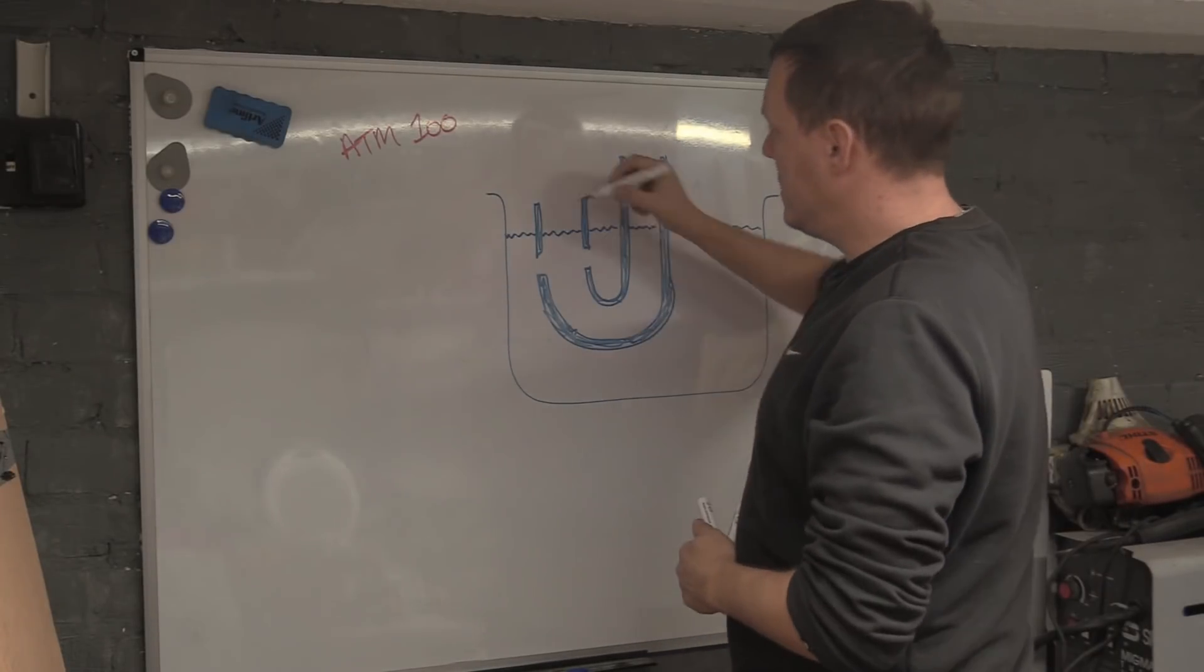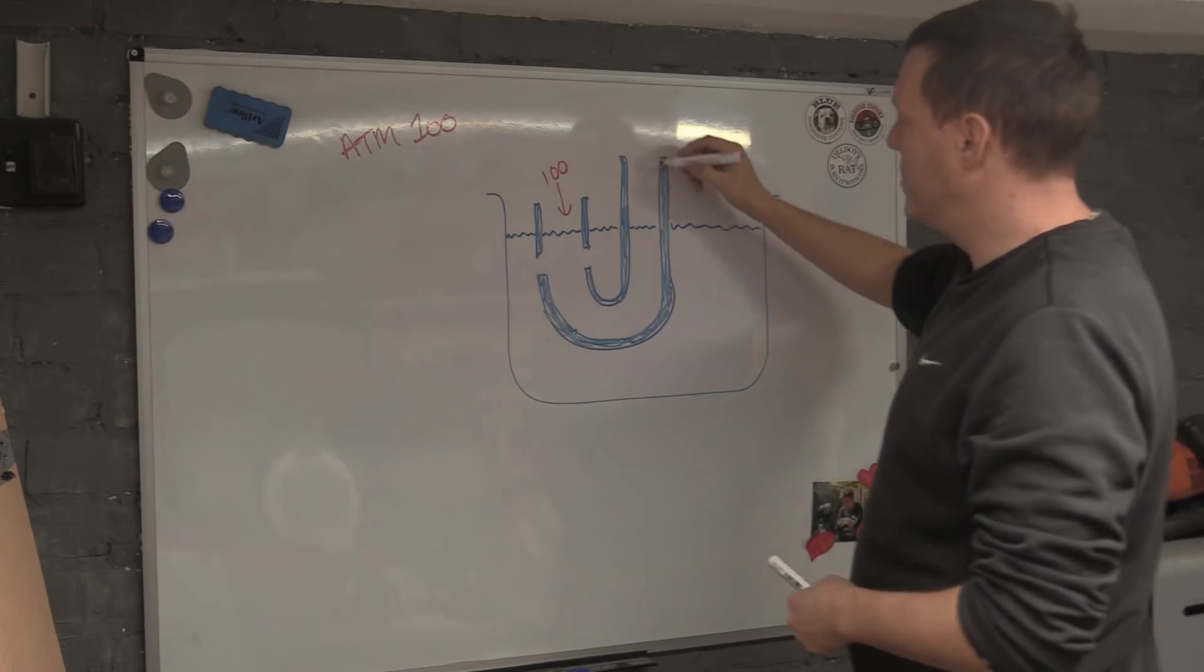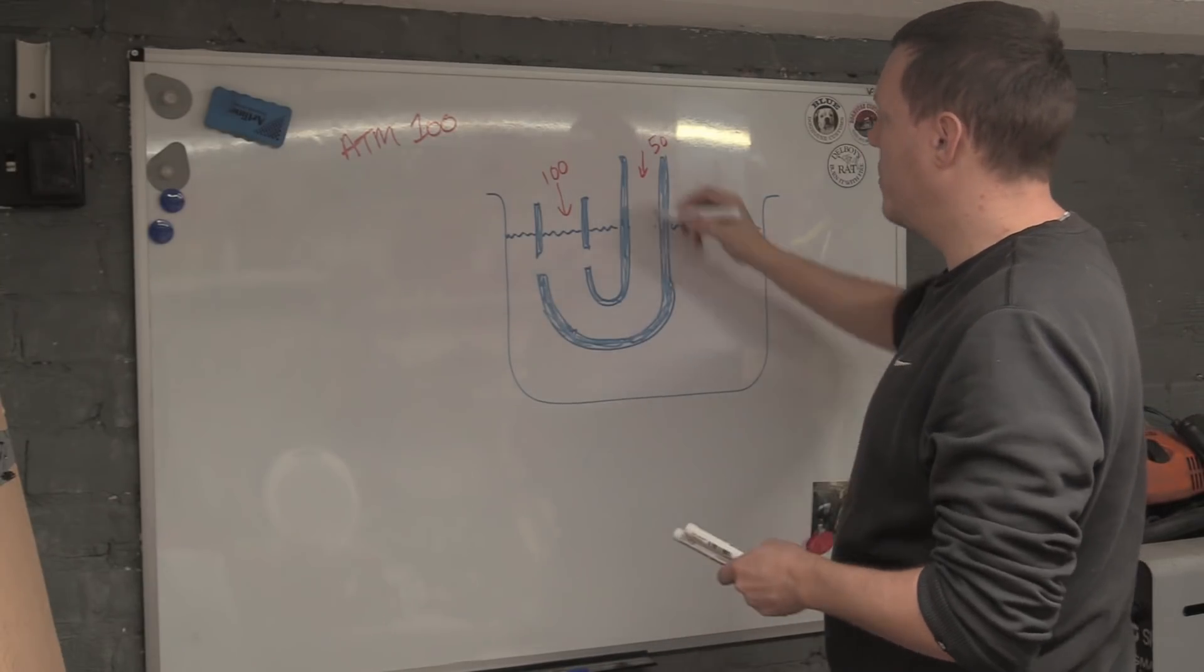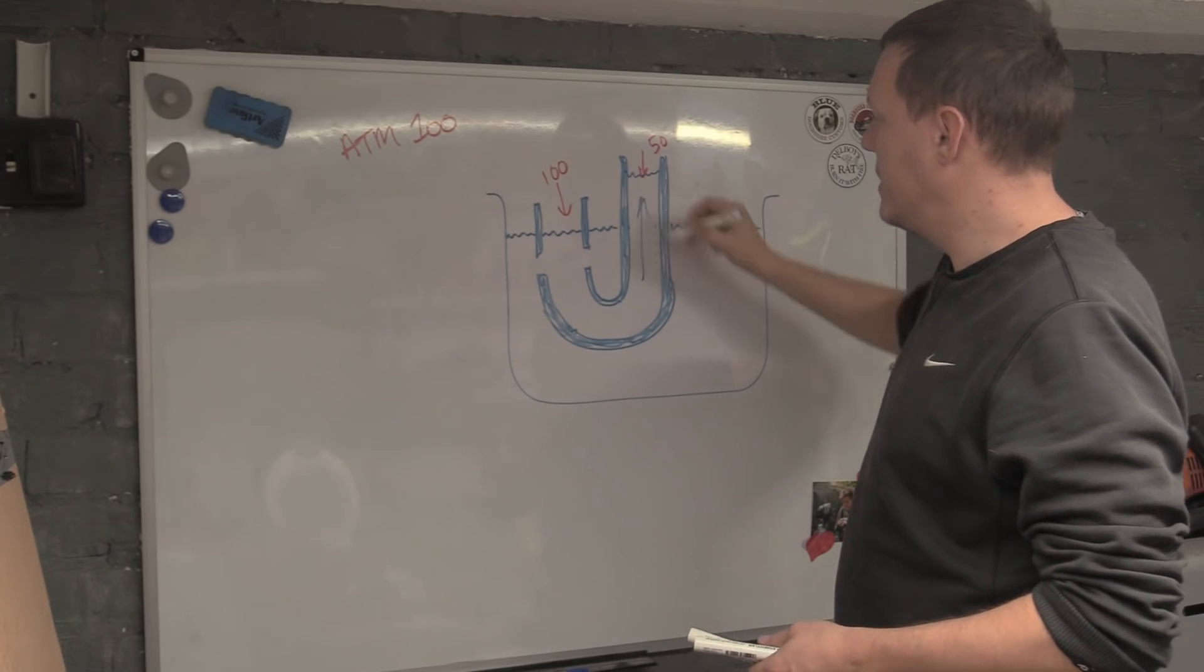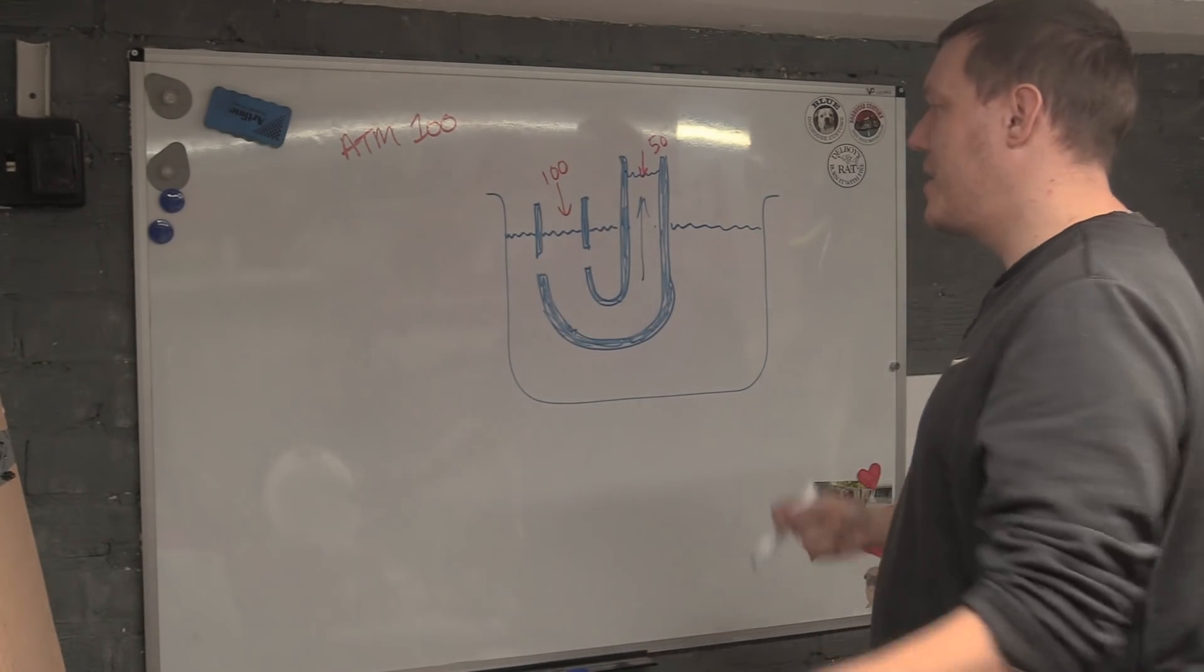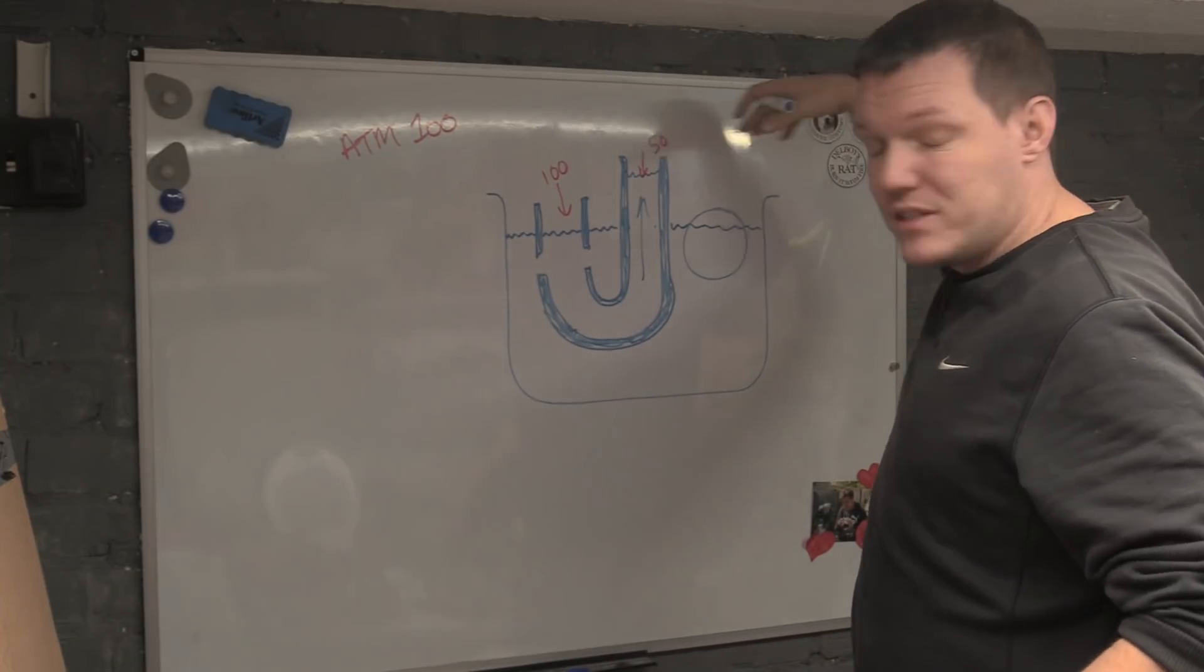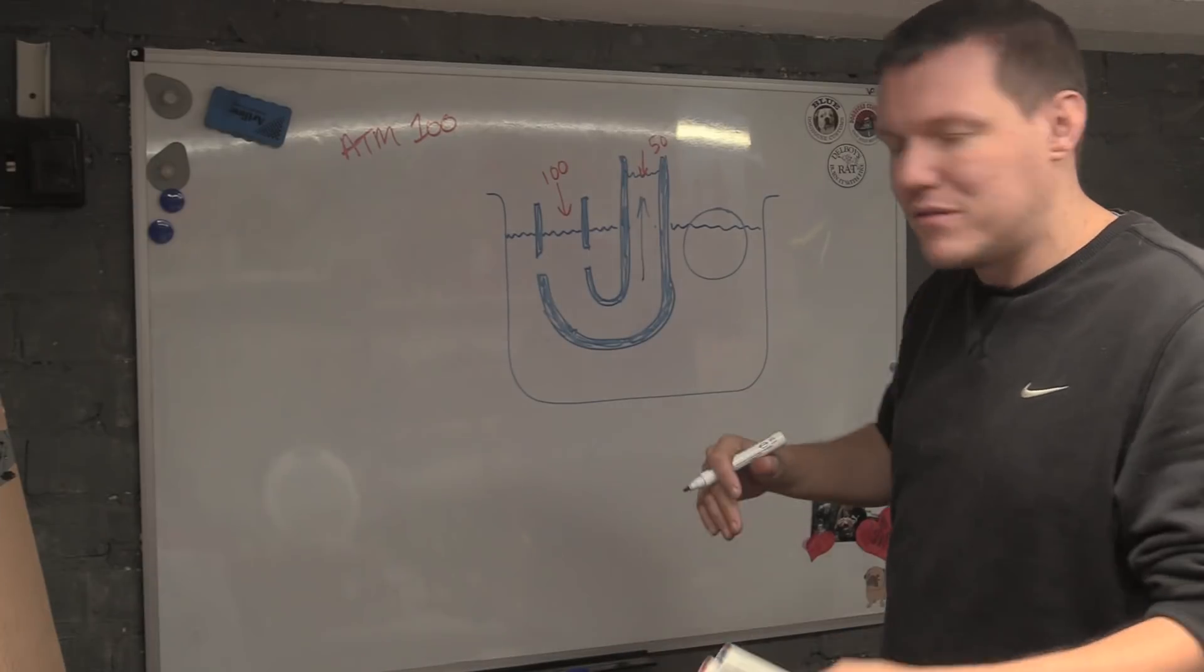So what's happening is we have our 100 pushing down which is our atmospheres, and we have 50 pushing down here. It loses, so the fuel level gets drawn up. Now as the fuel gets drawn up this way, what's going to happen is our fuel level's going to go down. And that's why we have a valve with floats. So we have a float with a valve and more fuel from the fuel tank can come in, but not too much. We want to keep this level right.